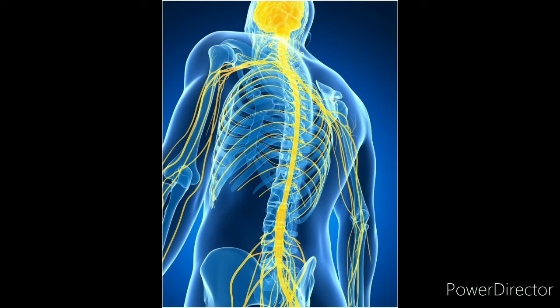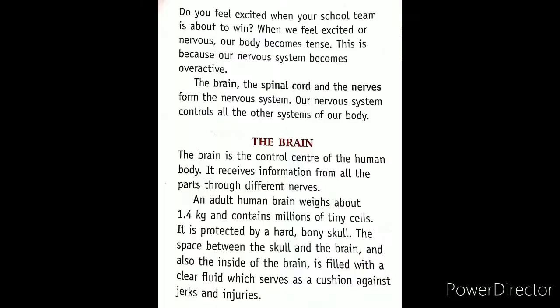The nervous system controls the body's other systems. The brain, spinal cord, and nerves make up the nervous system. We will study the parts of the nervous system one by one — first, we will study about the brain.